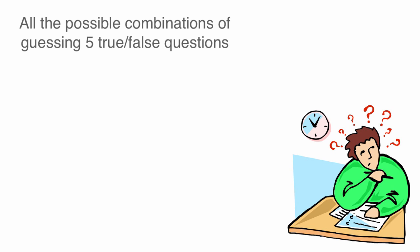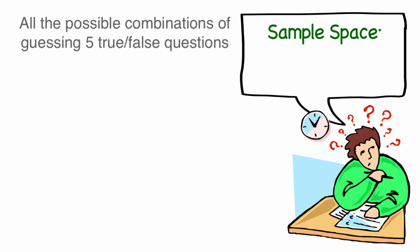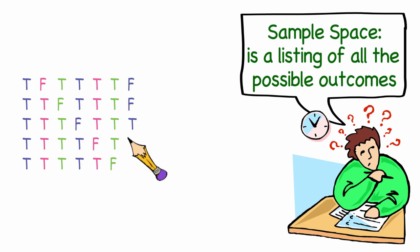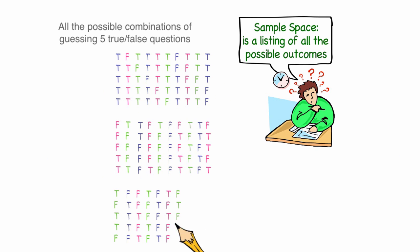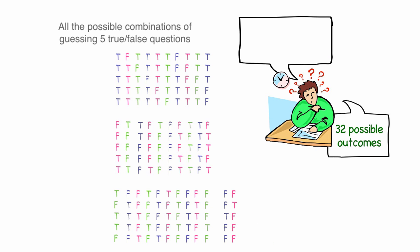Well, I could make a sample space, and by that I mean, I could write out a list of all the possible combinations, and then when I do that, I find there are 32 possible combinations.